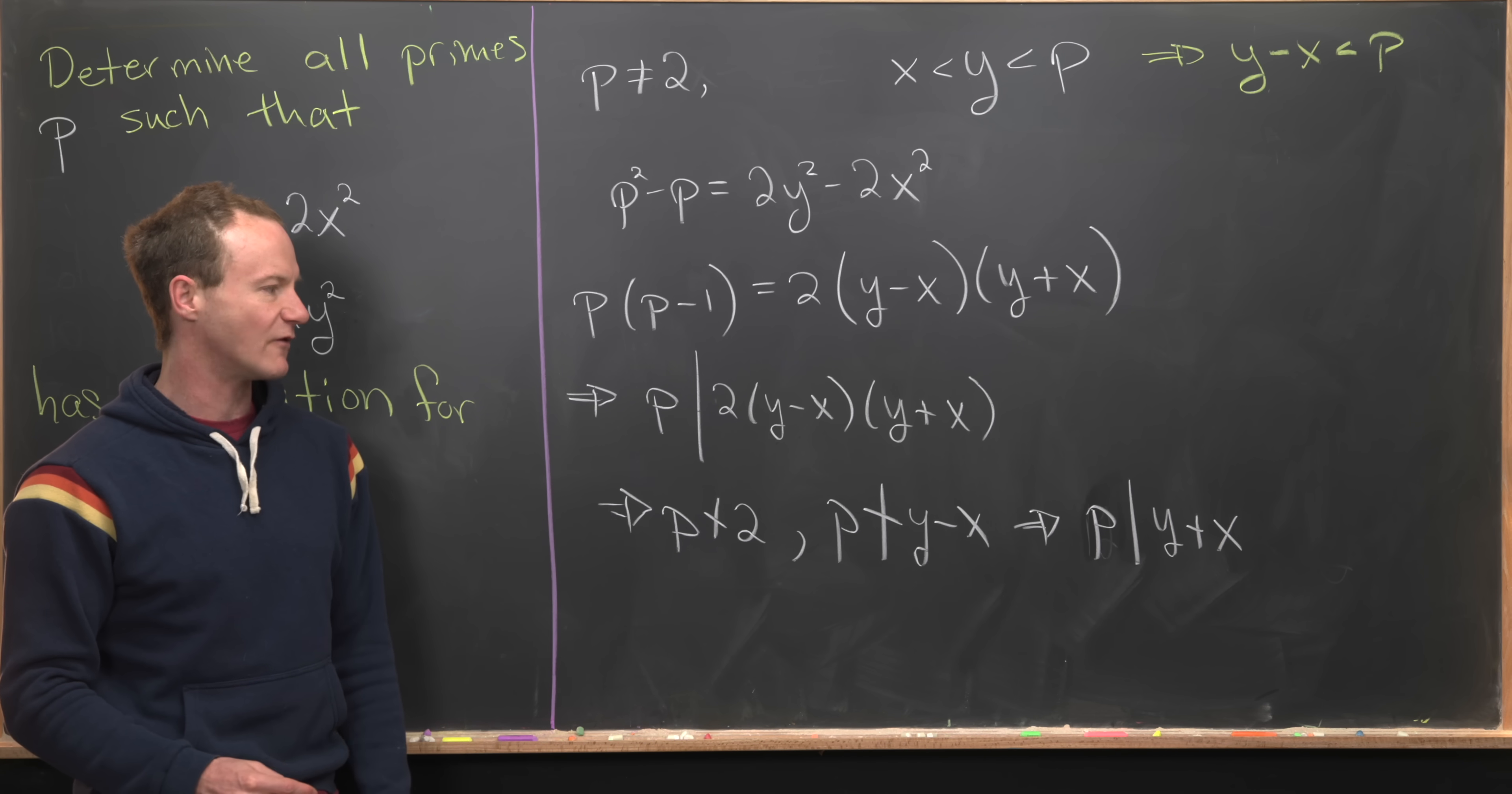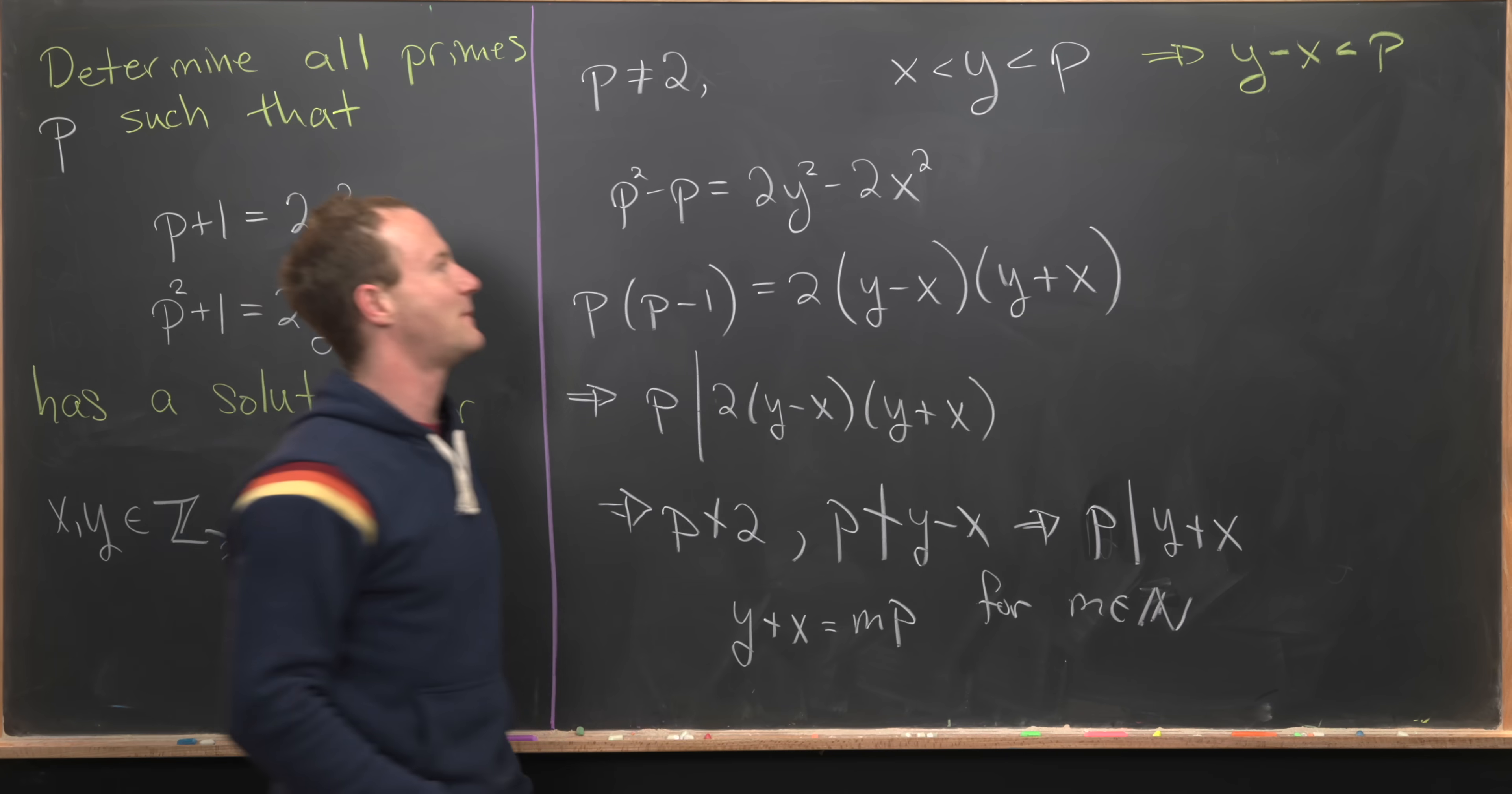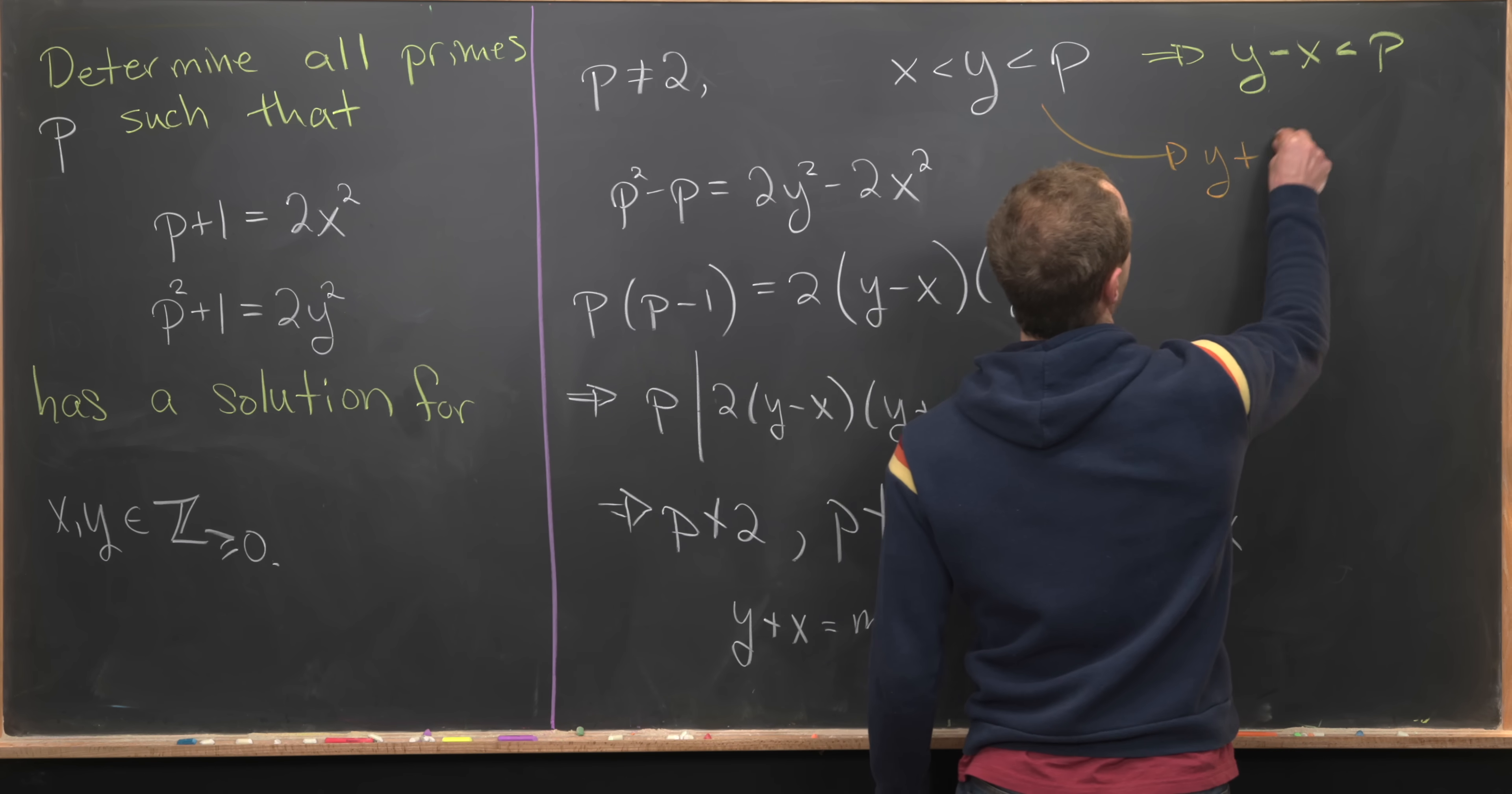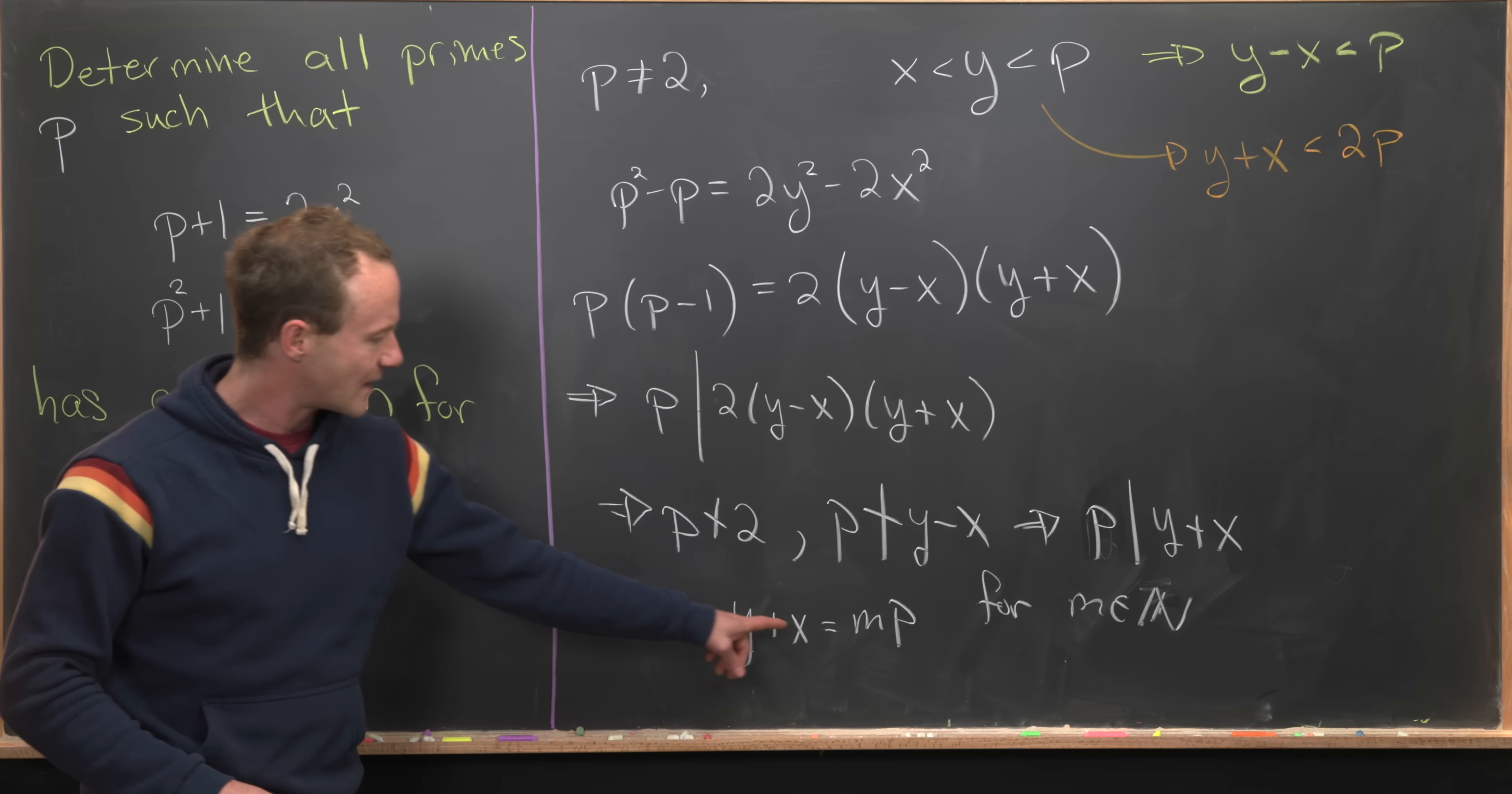At this point, we have y+x is a multiple of p. So let's write that down: y+x equals mp for some natural number m. But now we can make a parallel argument involving addition instead of subtraction.